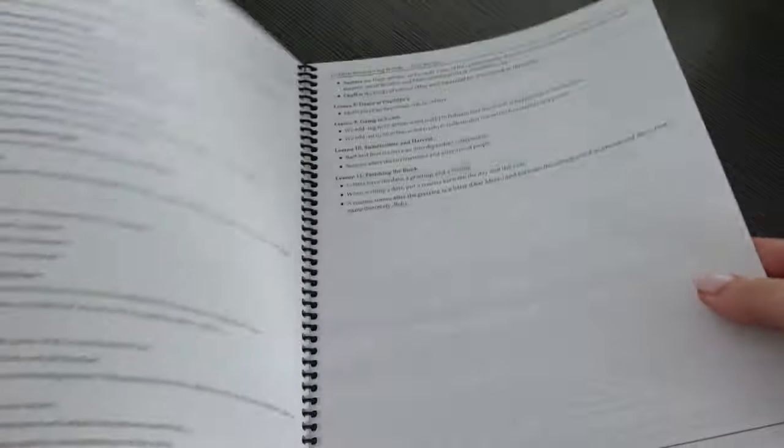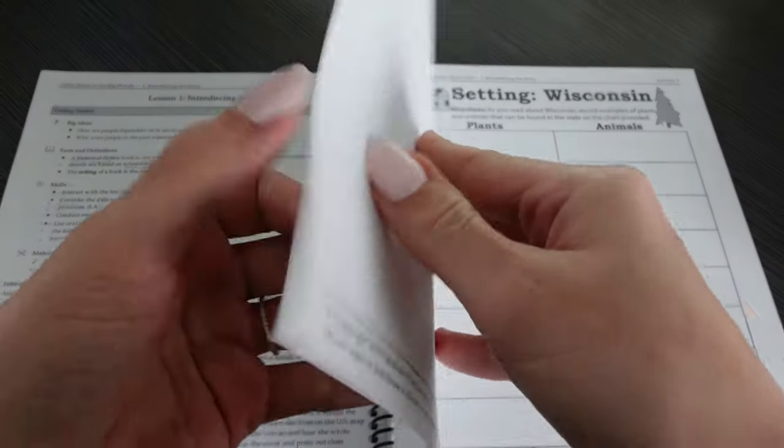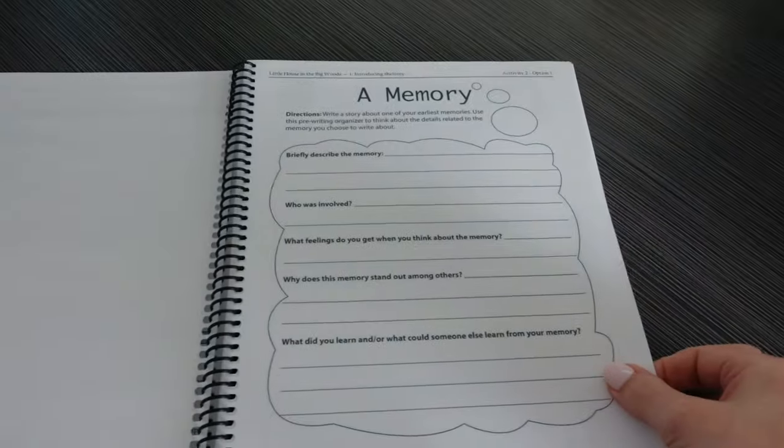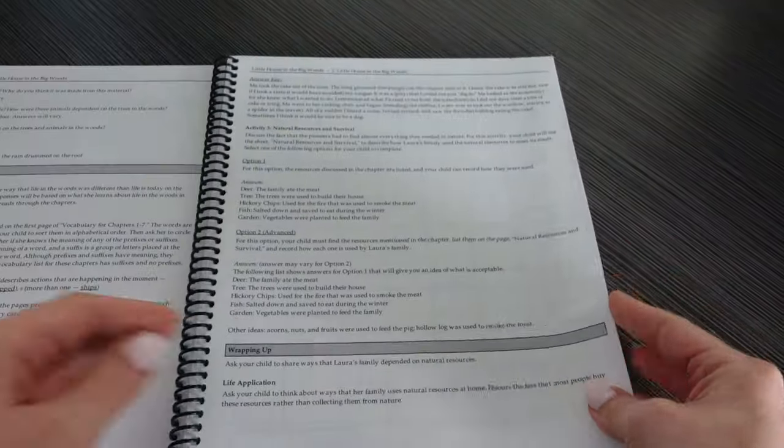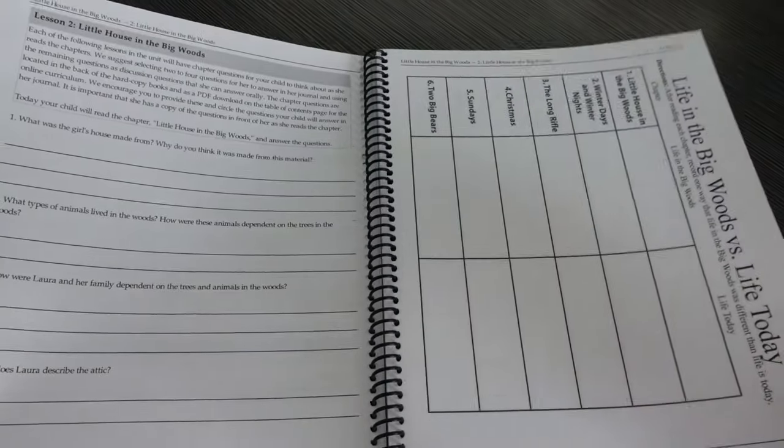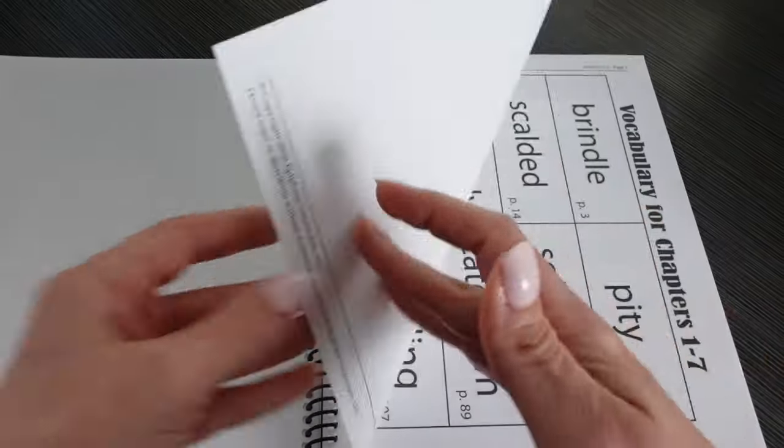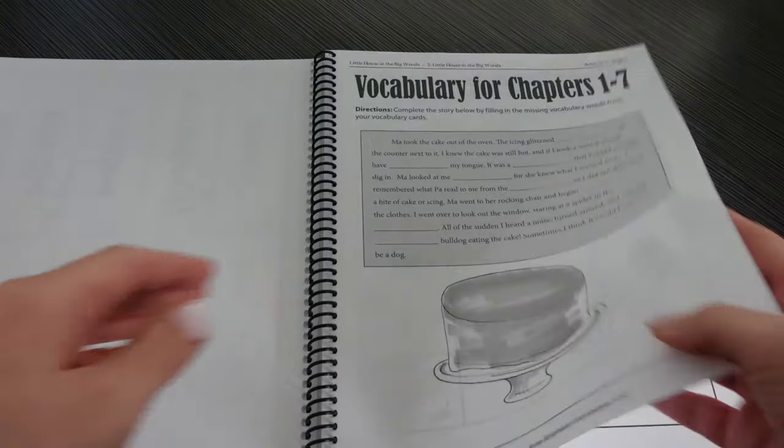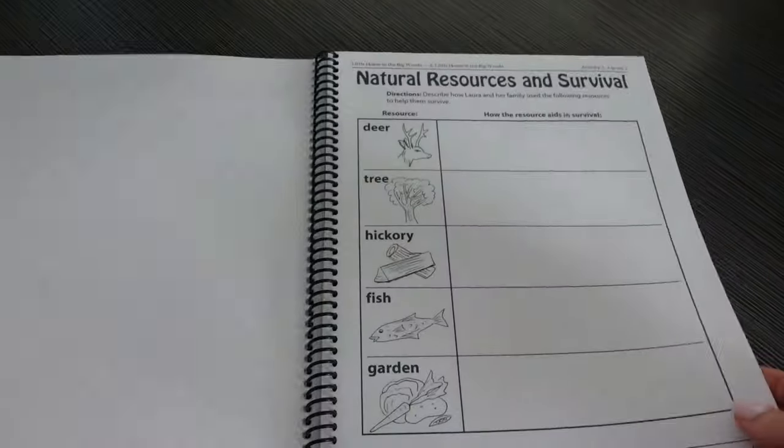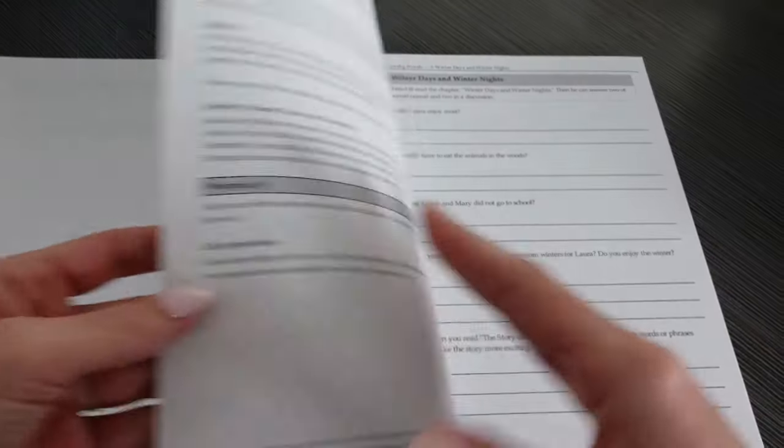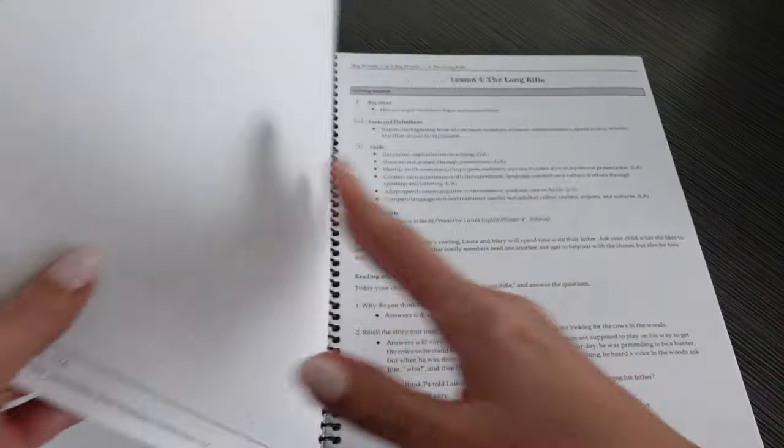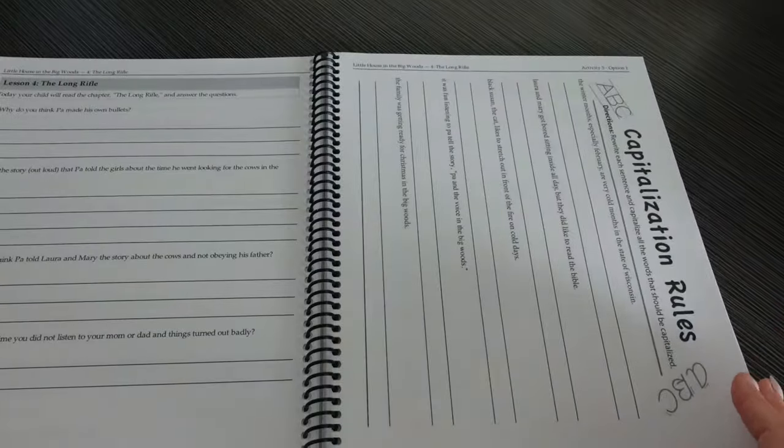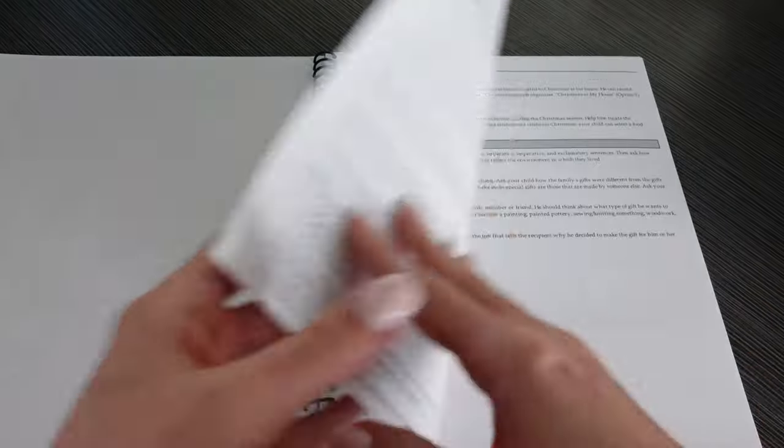This unit study has a lot of comparison on how they live versus how we live now. There's a lot of talk of responsibilities of survival, household chores, just really understanding how the setting and the scene of that world at that time. With all Moving Beyond the Page units, there are the assigned chapters to read. And then there are the discussion questions, which you can ask verbally. You can have your child fill out the activity.